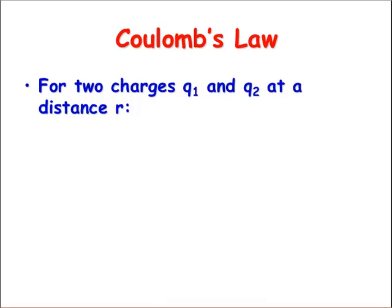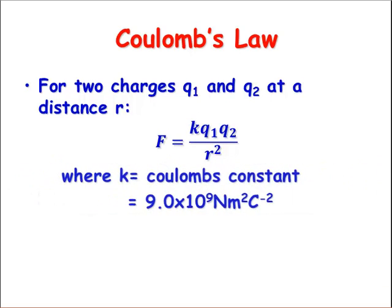His law was really summed up in this equation: the force equals K Q1 Q2 over R squared. K is a constant called Coulomb's constant, 9 times 10 to the 9 newtons meter squared per coulomb squared. Q1 is the magnitude of charge 1, Q2 is the magnitude of charge 2, and R is the distance between the center of each charge. That will be in units of meters.